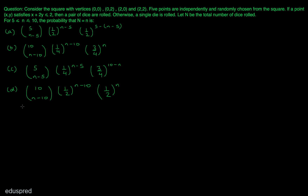Before solving the question, let me clarify one thing. The first term in these options — let's say this term is 10C(n−10) — this is 1 divided by 2 raised to the power (n−10), and this is 1 divided by 2 raised to the power n. Similarly, in part C, this is 5C(n−5), 1 divided by 4 raised to the power (n−5), and 3 divided by 4 raised to the power (10−n).